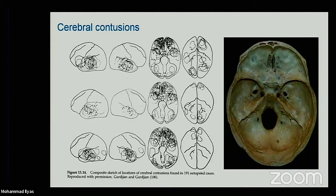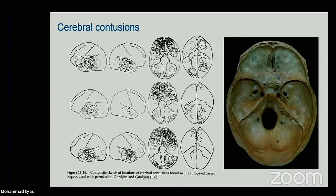Cerebral contusions in toddlers and infants are very rare, as pointed out by the previous speaker. They are very rare in kids due to different reasons: first, because in adults they are produced by the asperities of the skull base, and in kids there are no such asperities.